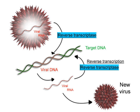Transcription inhibitors can be used as antibiotics against, for example, pathogenic bacteria and fungi. An example of such an antibacterial is rifampicin, which inhibits bacterial transcription of DNA into mRNA by inhibiting DNA-dependent RNA polymerase by binding its beta subunit, while 8-hydroxyquinoline is an antifungal transcription inhibitor. The effects of histone methylation may also work to inhibit the action of transcription.